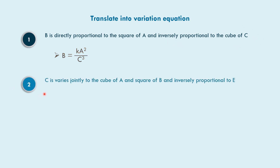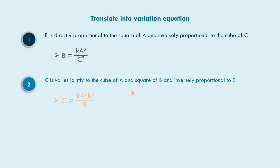In example number two, c varies jointly as the cube of a and square of b, and inversely proportional to e. We have two letters in the numerator: cube of a is a cubed, and square of b is b squared. So, c is equal to k times a cubed times b squared, over e.